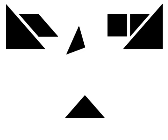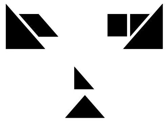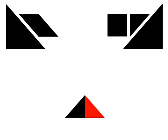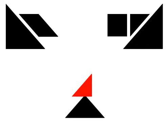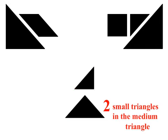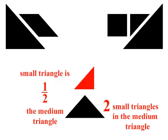Now let's look at the medium triangle and the small triangle. The medium triangle can be covered with two small triangles, so the medium triangle is equal to two small triangles, and the small triangle is half the medium triangle.